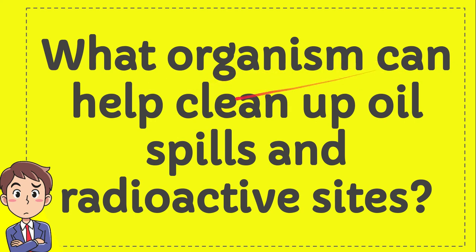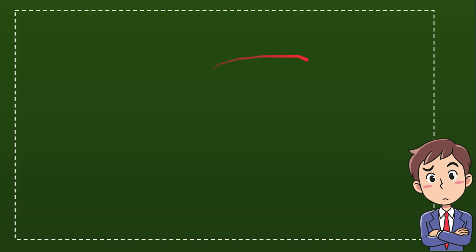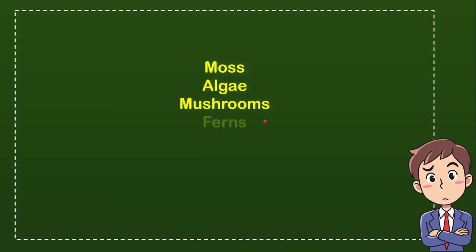What organism can help clean up oil spills and radioactive sites? I'll give you four options — try to guess the correct answer. Option one is mouse, option two is algae, option three is mushrooms, and option four is ferns. From these four options — mouse, algae, mushrooms, and ferns — which one do you think is correct?